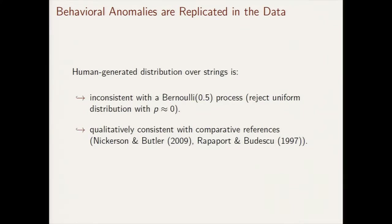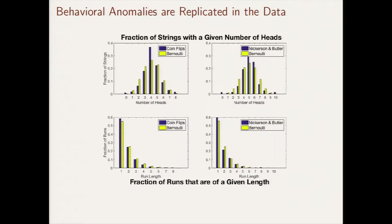A few stylized facts about these human-generated strings. First, the human-generated distribution over eight-length binary strings is inconsistent with what we'd expect under a true Bernoulli process. Moreover, the way this distribution deviates is consistent with prior references in the literature. Looking at the top-left figure: the x-axis is the number of heads in the string, the y-axis is the fraction of strings with that total. The purple bars are our experimental data, the yellow bars are what we'd expect under a Bernoulli process. Human subjects generate too many strings with a balanced number of heads — four heads, four tails.